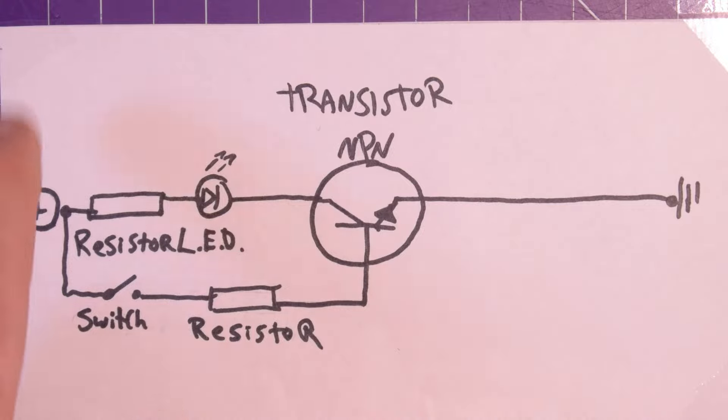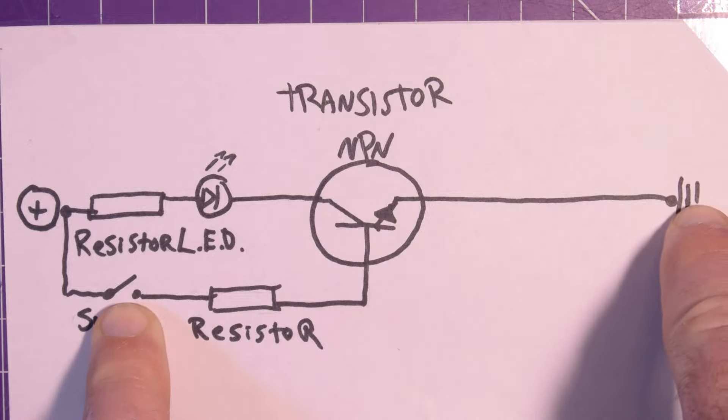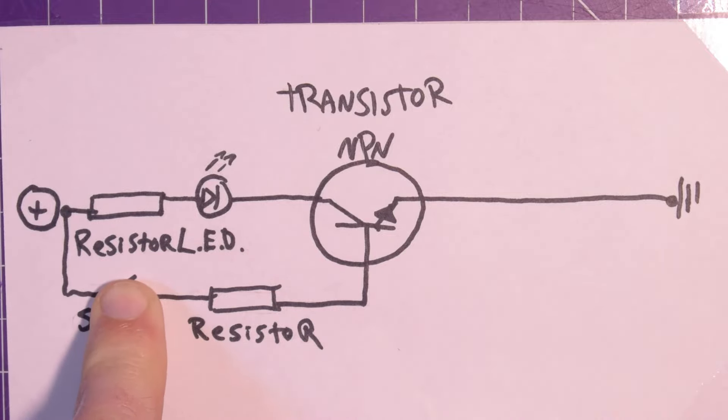So how this circuit will work is we have our 5 volts in. We're going to allow current to flow through the base and out the transistor to ground by pressing this switch, and then current will be allowed to flow through our LED.